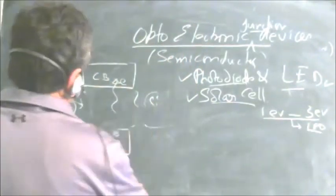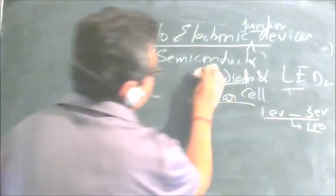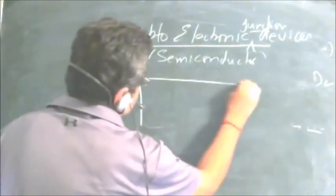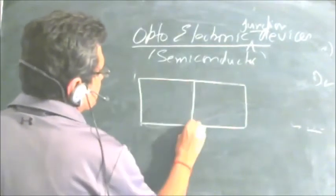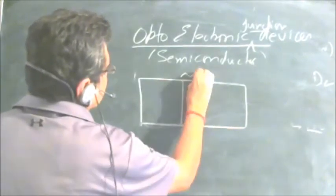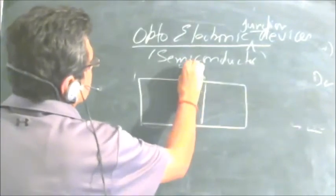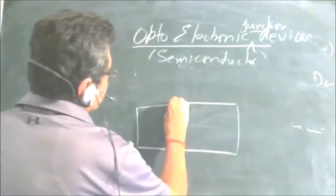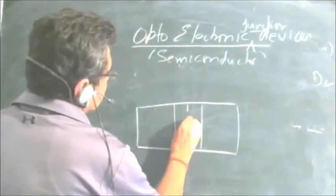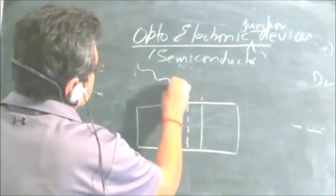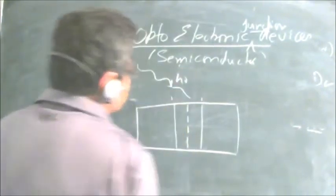Let us first look at how a photodiode really functions and the principles on which it operates. A photodiode is basically a junction diode which has an opening. The depletion region has a window which allows photons to reach the depletion region. This is the diode, this is the depletion region, this is the junction boundary, and there is a window for the photon to reach the depletion region.